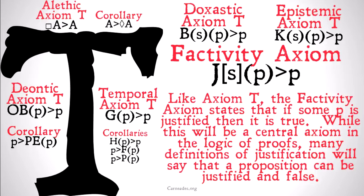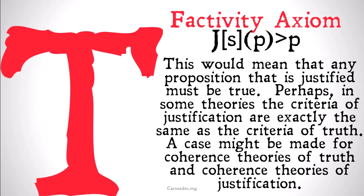Because we're faulty human beings, because there could be an evil deceiver, because of whatever list of skeptical reasons you want, it seems that we could be justified in something that in fact is not the case. If you think that is the way things work, then you're not going to want to believe the factivity axiom. This would mean that any proposition that is justified must be true.